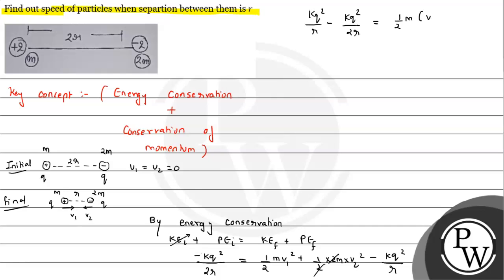The value comes out to be k q squared upon 2r equals half m times v1 squared plus v2 squared. The half cancels, so finally we have the equation: v1 squared plus v2 squared equals k q squared upon m r. Let's say this is our expression number 1.